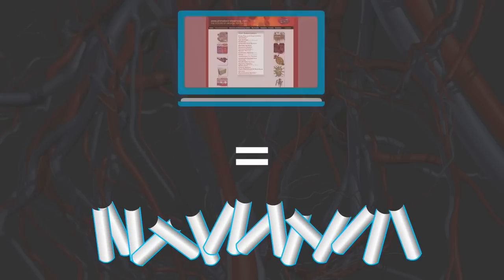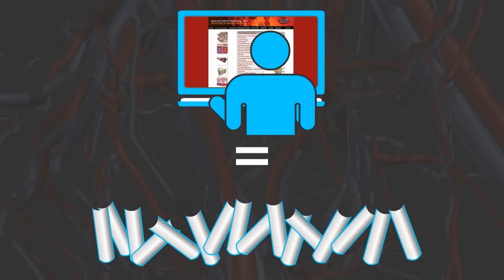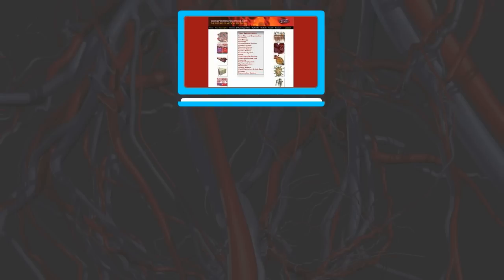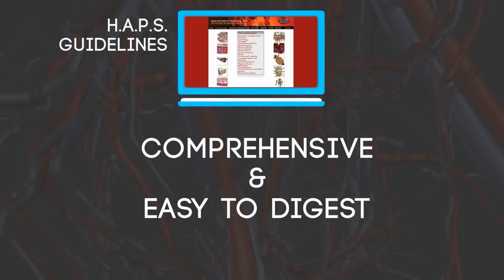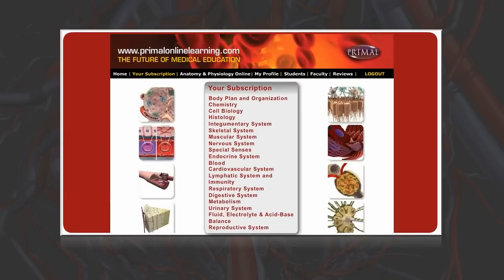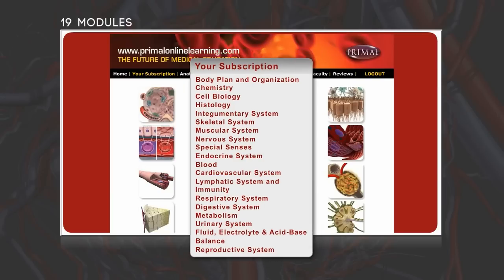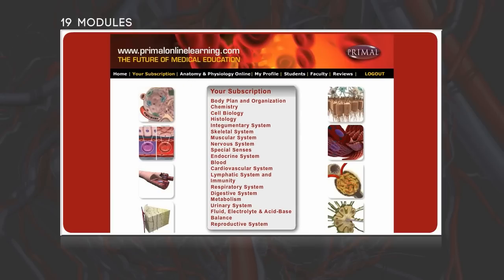With content equivalent to the major A&P textbooks, this e-learning resource can be used as a supplement or even as a replacement to existing resources. Adhering to the HAPS guidelines for the A&P curriculum, Anatomy and Physiology Online delivers a comprehensive and easy-to-digest resource made up of 19 distinct yet interrelated modules covering everything students need to pass their exams.